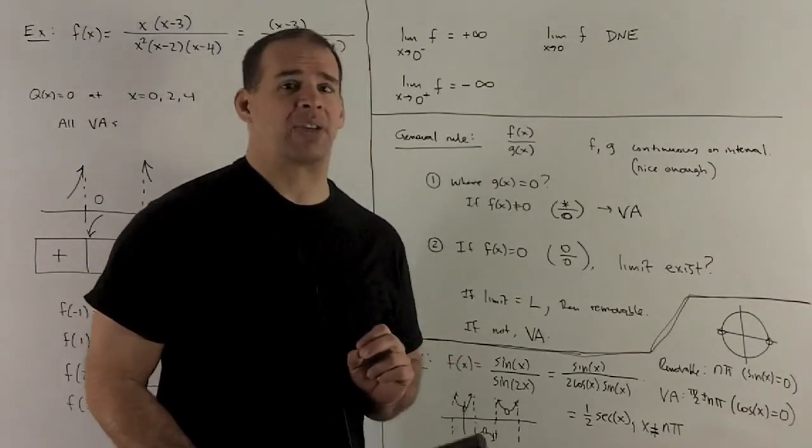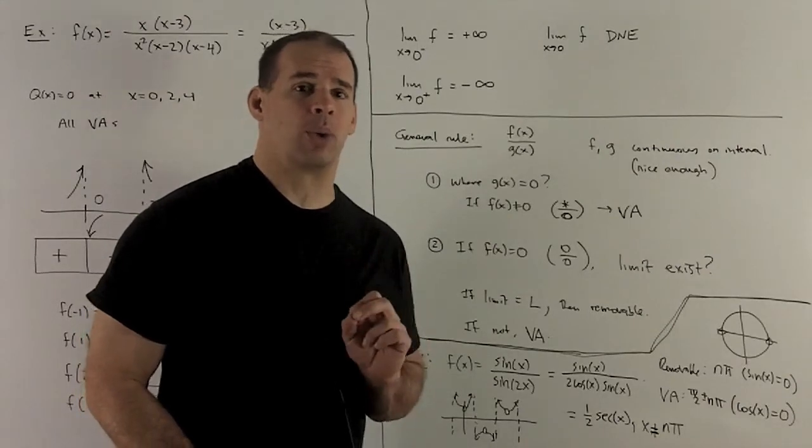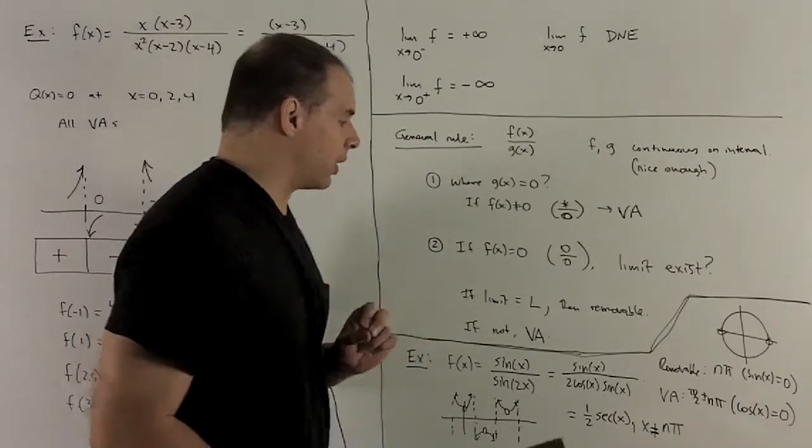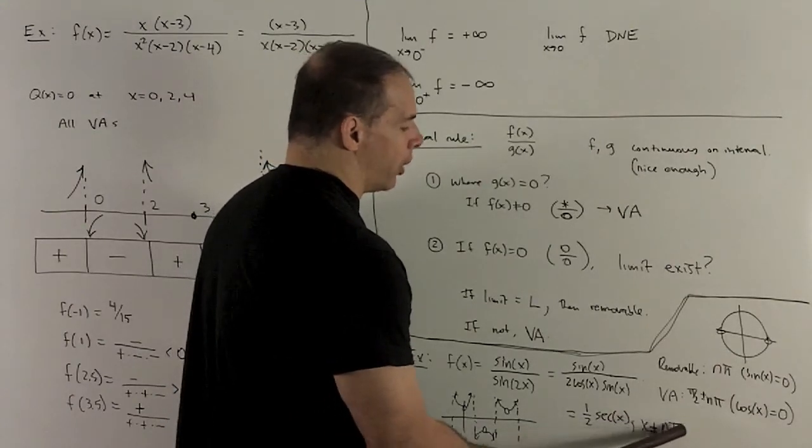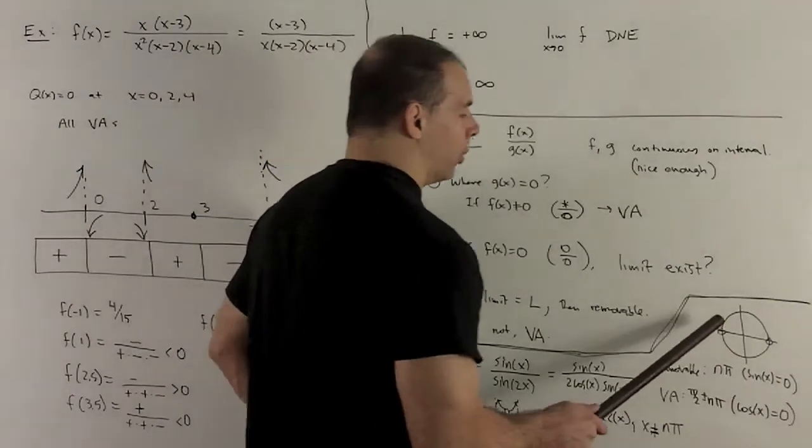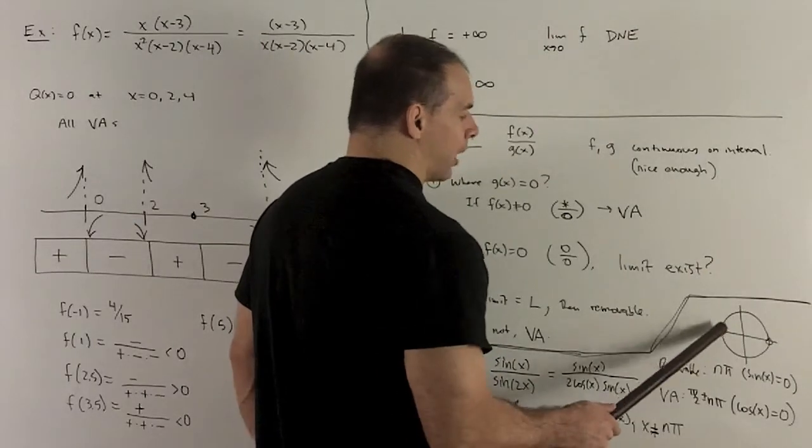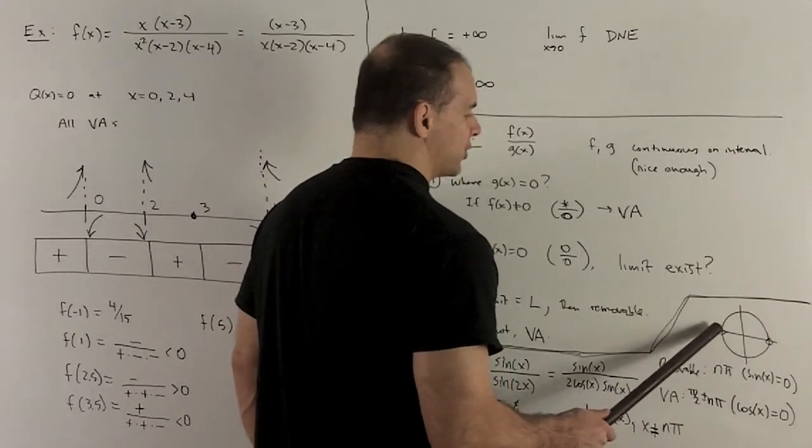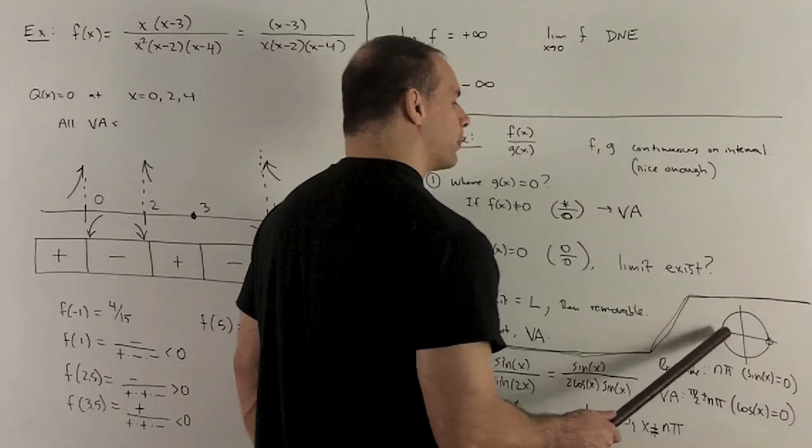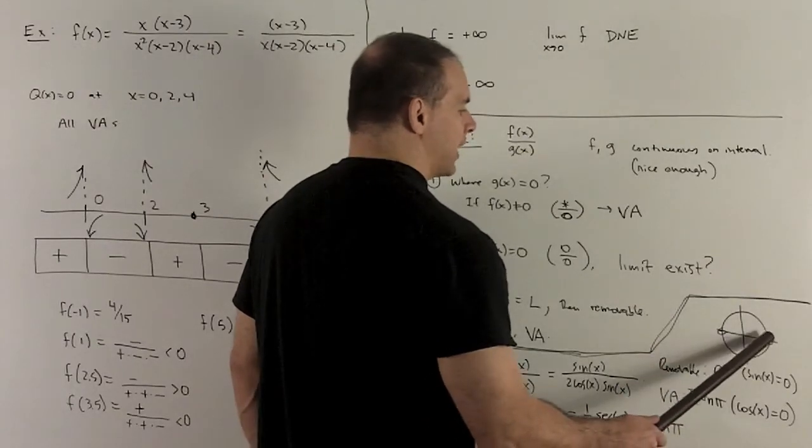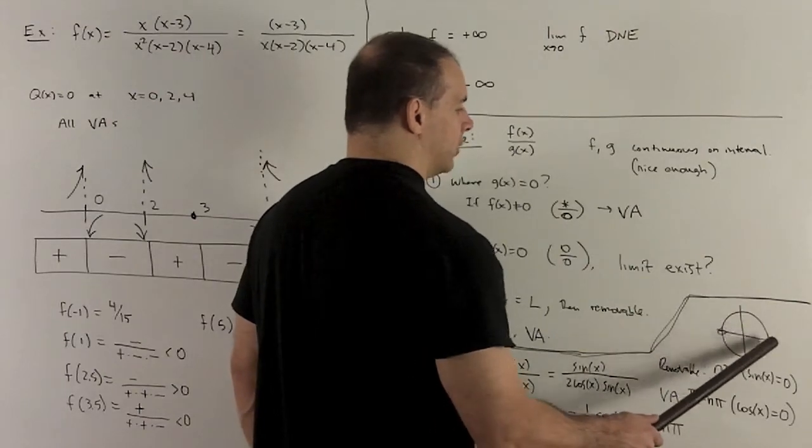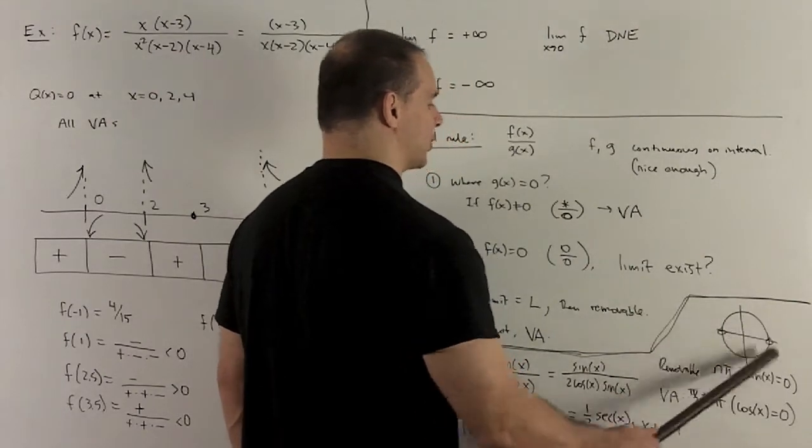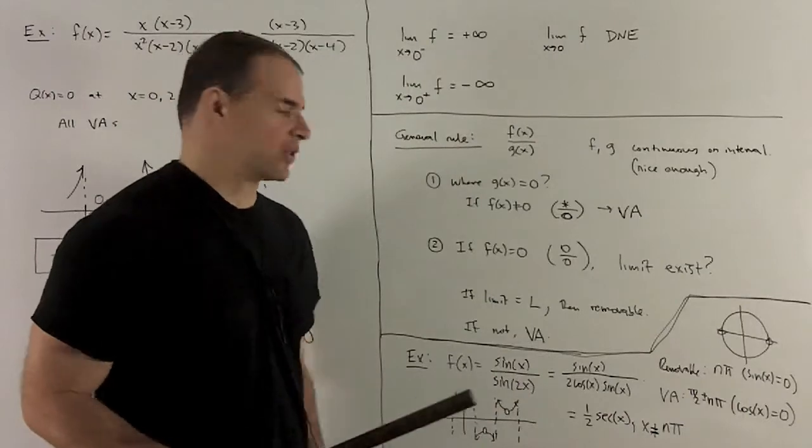Also note, since I canceled out those sines, I have to throw away every point where sine of x is equal to 0. So, I'm going to have 1 half secant of x, and then x is not equal to a multiple of pi. Note, why is that? Well, where is sine of x equal to 0? Sine is going to be the y values for the unit circle. We want to know when is y equal to 0. It's going to be 0, pi, 2 pi, 3 pi, and so on. So, integer multiples of pi.